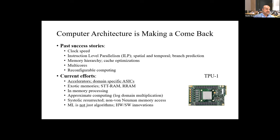We have done some work in my group with some colleagues in Spain on approximate computing. The idea is: if you're doing multiplication and addition and you go to the log domain, you can do addition of two numbers instead of multiplying. The point is that if you do approximate computing, neural networks — at least CNNs — are forgiving in terms of accuracy. They may do a good job of predicting results even if you're not using all the bits you would have originally.